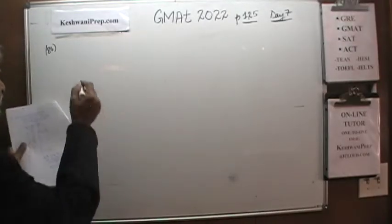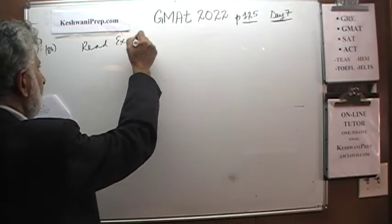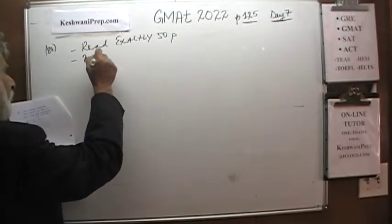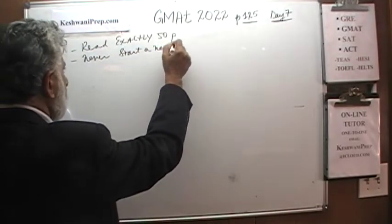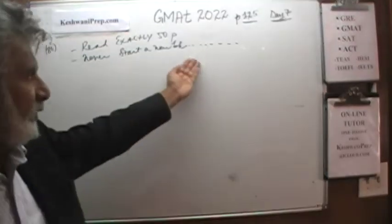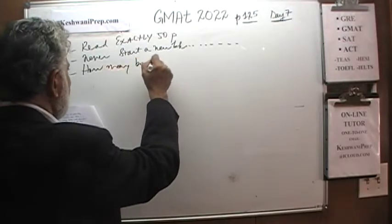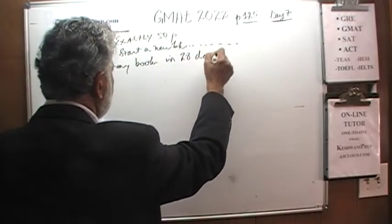Let's look at number 86. Number 86 is a classic example where — and I emphasize in every video — you must have the book in front of you. Read the problem, read it one more time if you have to, because it is a tricky question. Here is what we are told: we are going to read exactly 50 pages per day. We are never going to start a new book on the same day when we finish the other book, regardless of how many pages we have read. The question is: how many books can we read in 28 days?